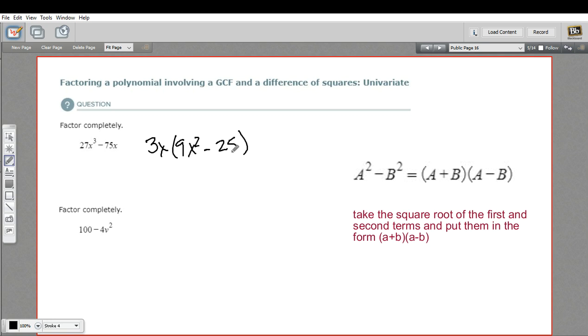Aha. So now we do have a difference of squares. Let's go ahead and take the square roots of these two things in the parentheses. So this is 3X and this is 5. So to factor that out with a difference of squares, we can write this as 3X plus 5 times 3X minus 5. But we have this original factor that we took out, so we have to include that in our final answer as well. And that's your final factorized form.